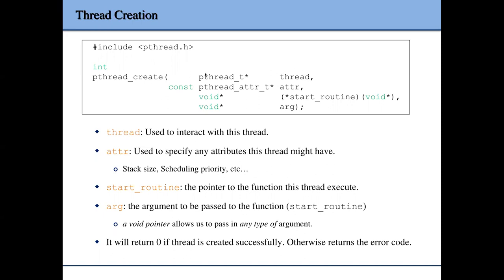The second argument is an attribute, which means you can specify some attributes when creating the new thread. For example, you may want to use a larger stack size or set a higher scheduling priority. If you want to modify those attributes from default, you can use the second argument to specify them. If you don't want to specify any attribute, you can pass a NULL pointer and the library will use the default configuration.